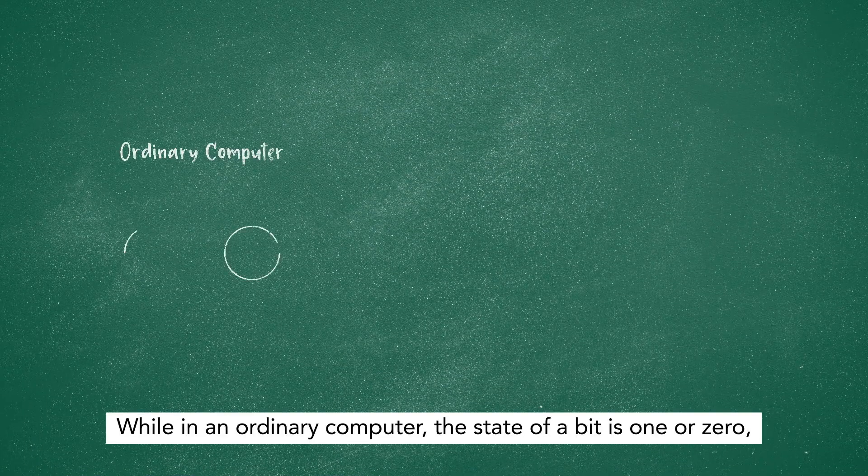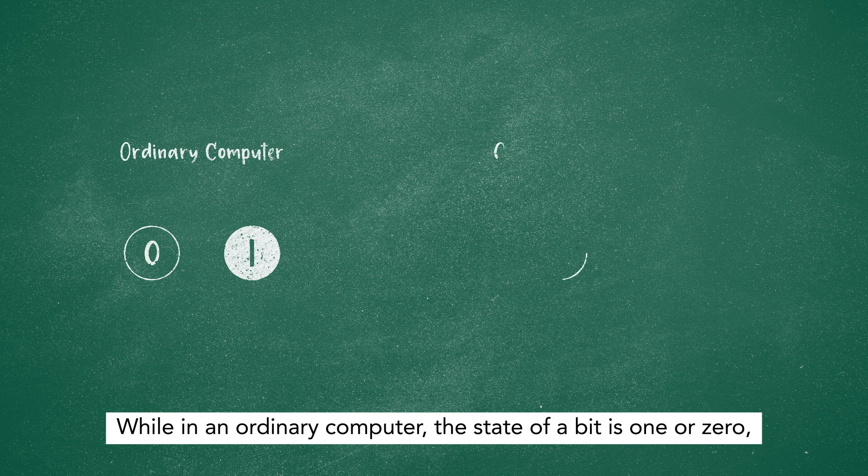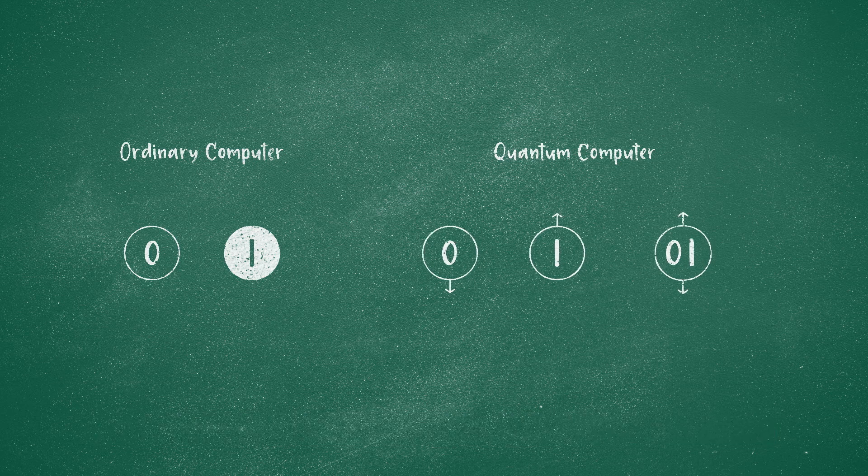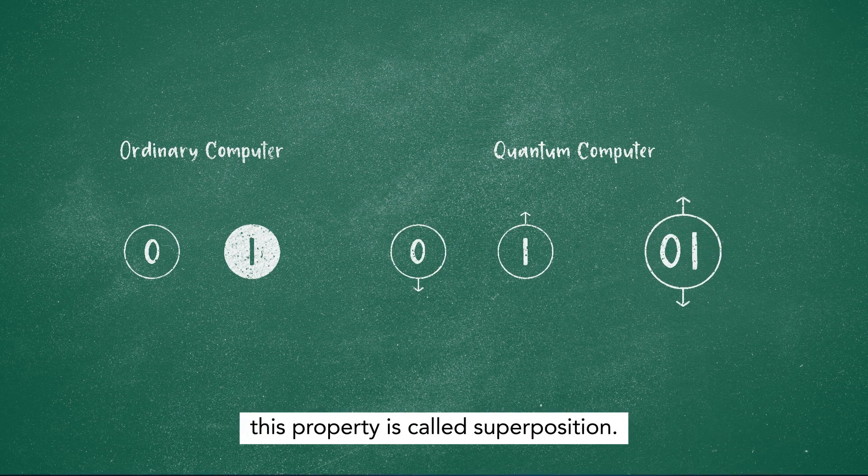While in an ordinary computer the state of a bit is 1 or 0, a qubit state can be 1, 0, or 1 and 0 at the same time. This property is called superposition.